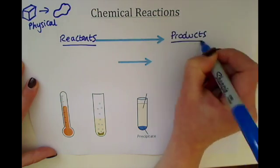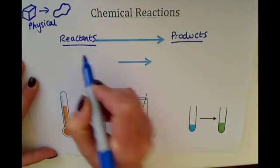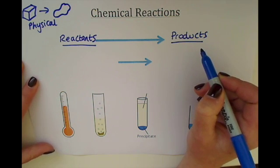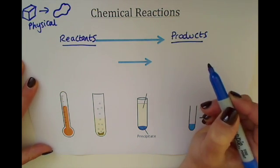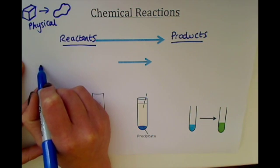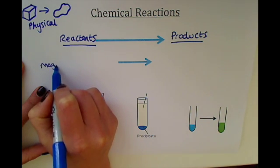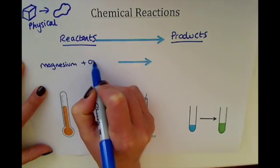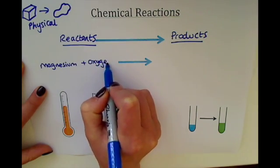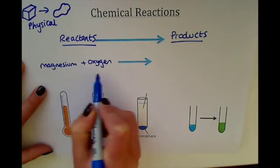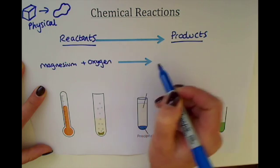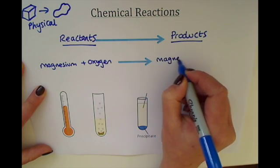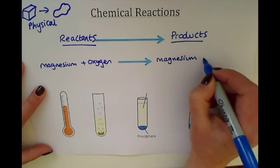Everything on the left-hand side are the reactants and everything on the right-hand side of the arrow are the products. For example, if we were to react magnesium with oxygen, we'd write our reactants here and the product that we would make in this case would be magnesium oxide.